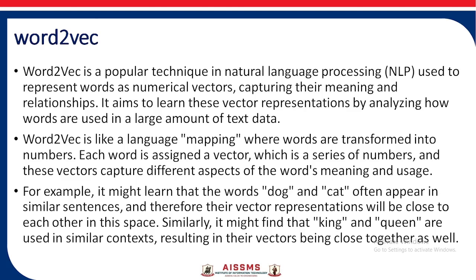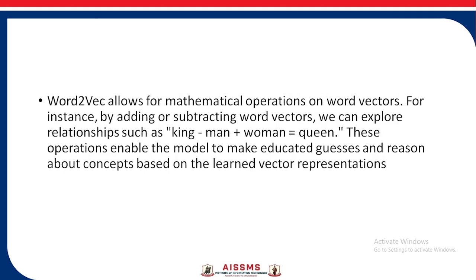Similarly, Word2Vec might find that 'king' and 'queen' are used in similar contexts, resulting in their vectors being close together. Word2Vec also allows for mathematical operations on word vectors — for example, by adding or subtracting vectors we can explore relationships like: king − man + woman = queen. These operations enable the model to make educated guesses and reason about concepts based on the learned vector representations.